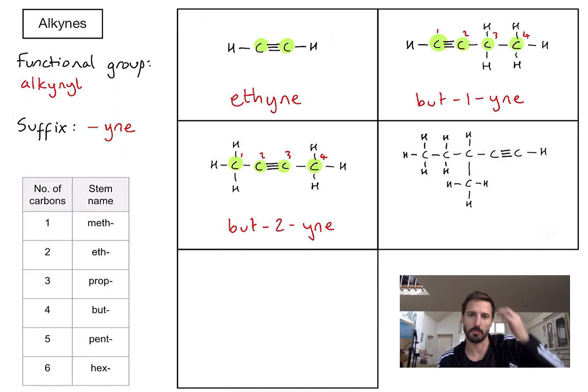Fourth example. Slightly more complicated looking one here. First of all there was a triple bond in there. It's definitely going to be an alkyne. Let's find my longest carbon chain. I've got one, two, three, four, five. It's my longest chain. So that's going to relate to the stem name of pent.